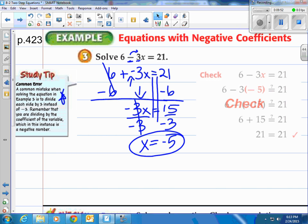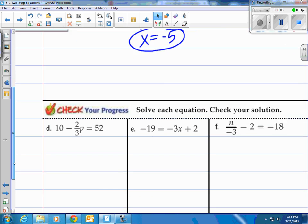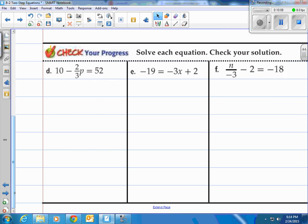Let's take a look at the check. Put negative 5 in for x value. And then multiply, subtract, you get 21 on both sides. And it does check out. How about you get a shot with these three? Here we go. I'll do these in green this time.